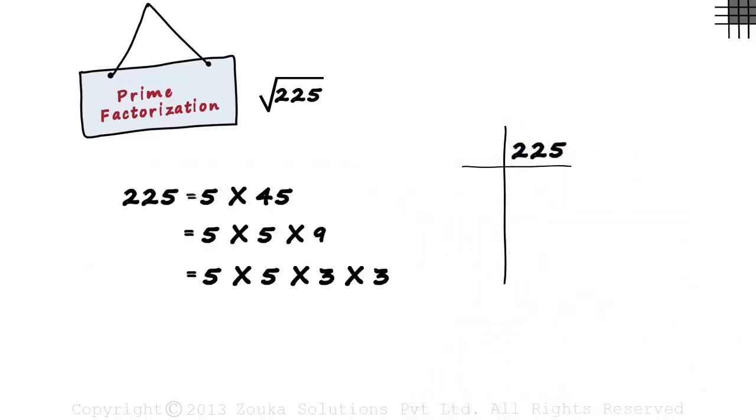225 is divisible by 5. So we write a 5 here. We just write the prime factors in this column. 5 multiplied by 45 gives us 225. 45 is not prime. Hence, we continue with this process. 45 is also divisible by 5. Hence, we write a 5 here. And 5 multiplied by 9 gives us 45.